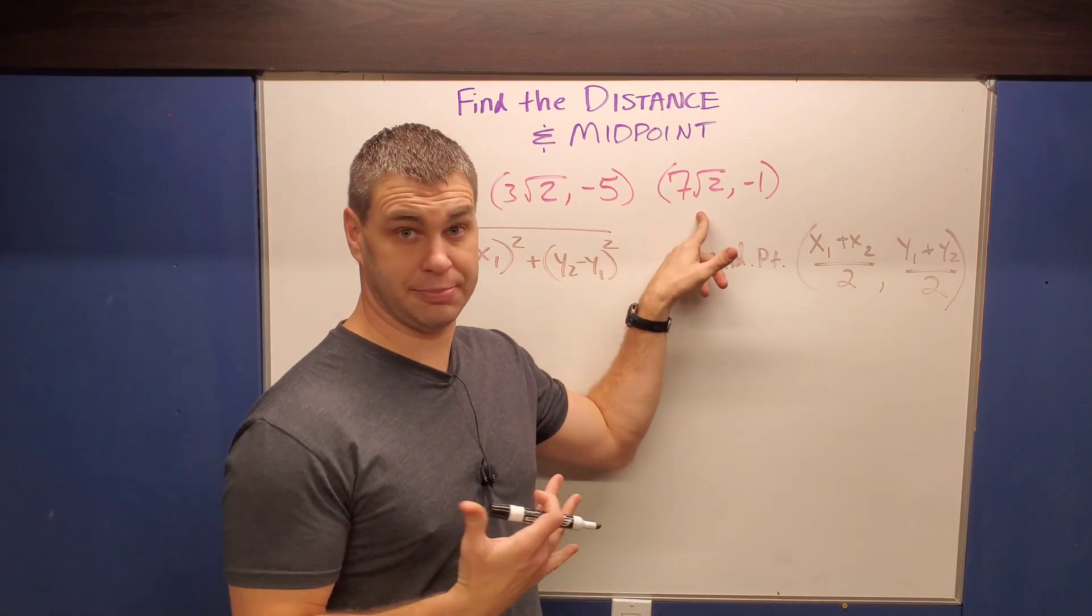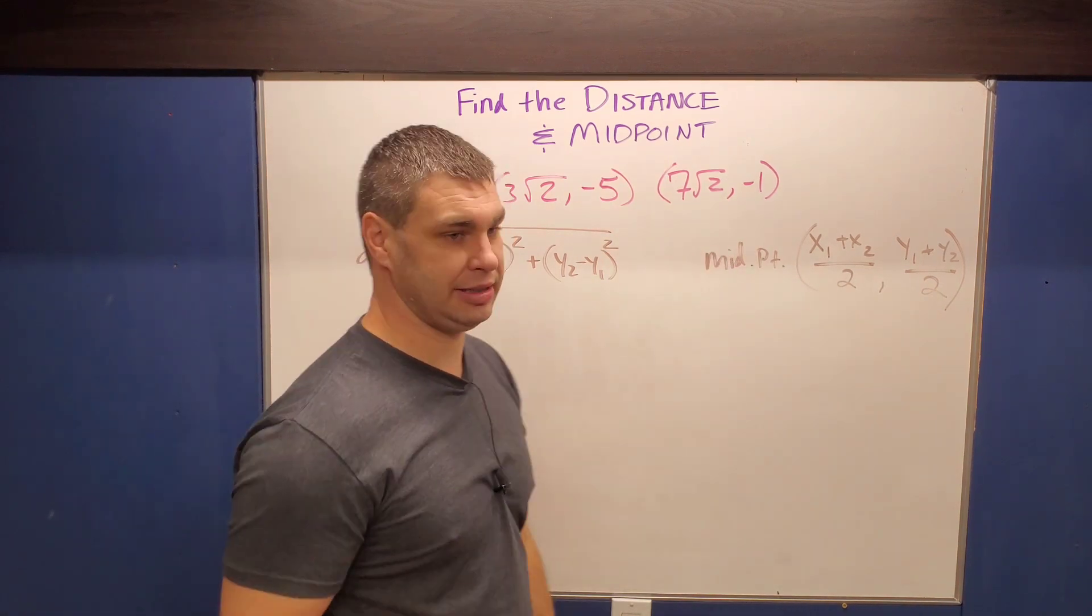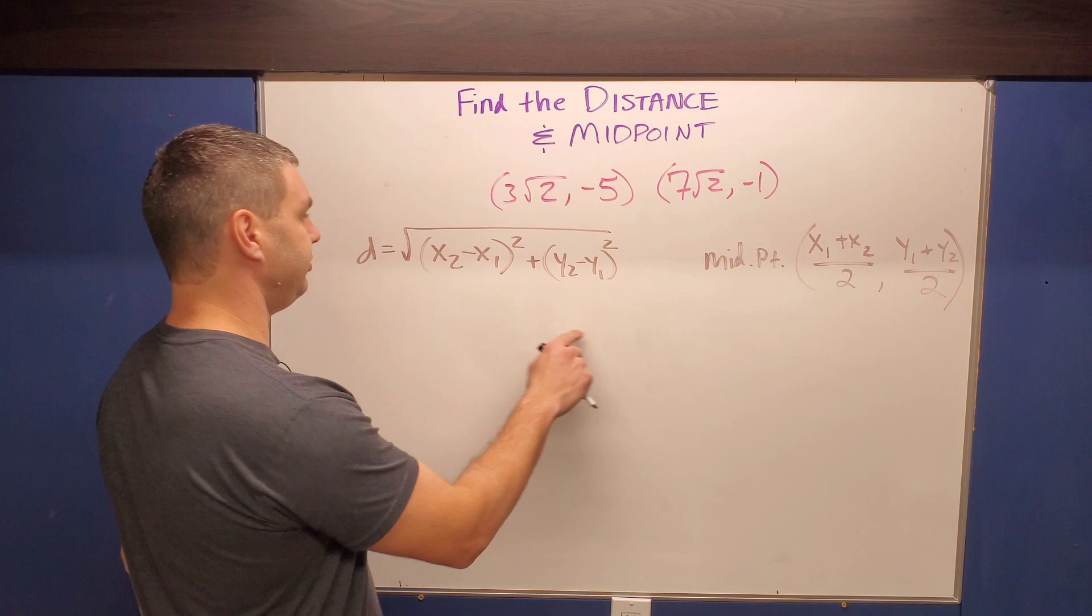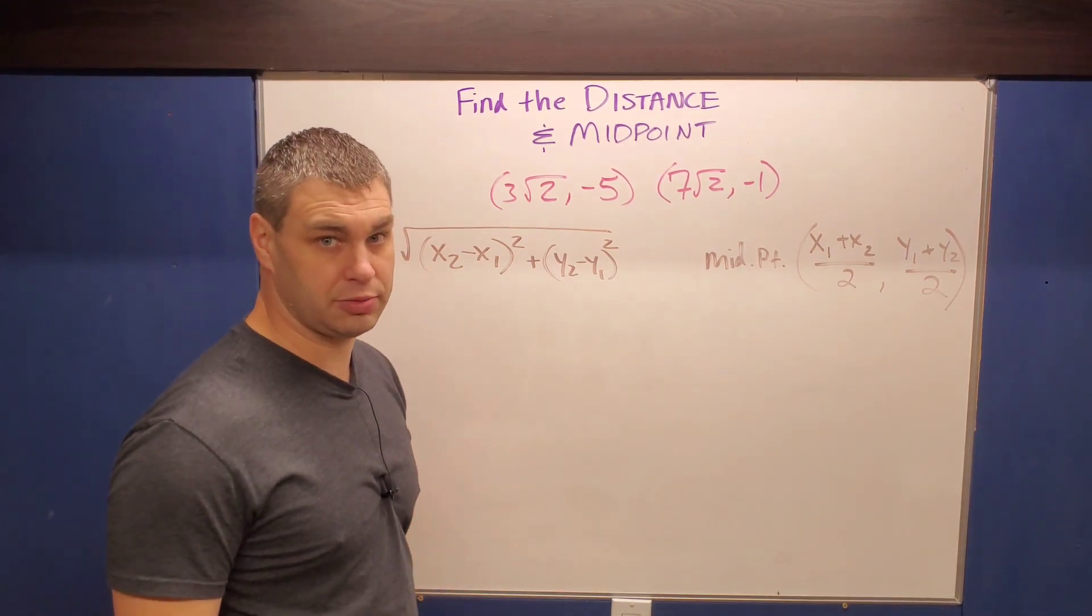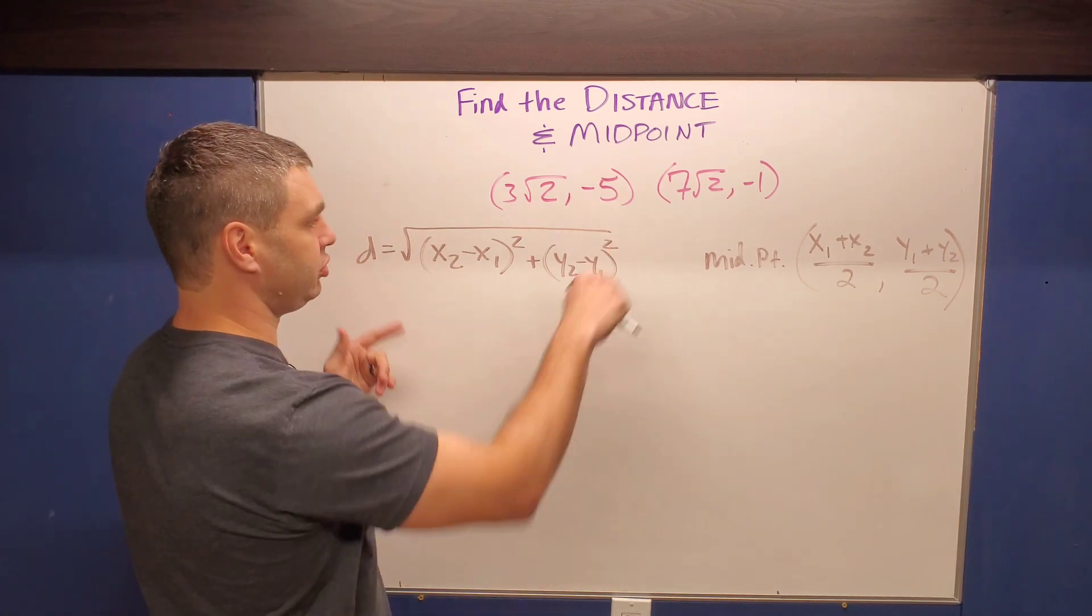We got this first one with the points here in pink, and then we'll do another one in an example here in a little bit. The distance formula is x2 minus x1 quantity squared plus y2 minus y1 quantity squared, all underneath the big square root sign there.